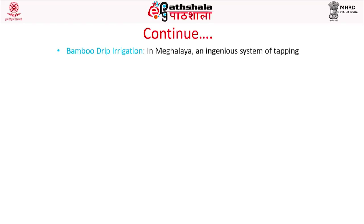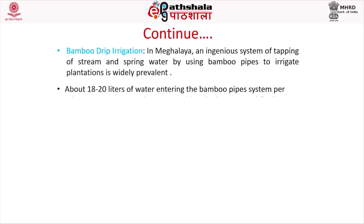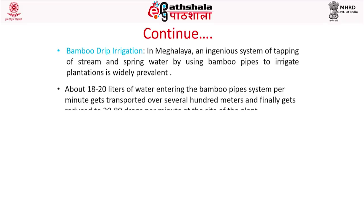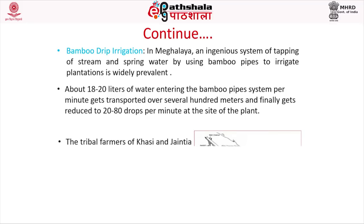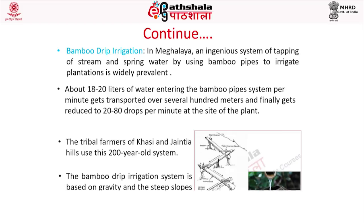In Meghalaya, an ingenious system of tapping stream and spring water using bamboo pipes to irrigate plantations is widely prevalent. About 18 to 20 liters of water entering the bamboo pipes per minute get transported over several hundred meters and finally reduced to 20 to 80 drops per minute at the plant site. The tribal farmers of the Khasi and Jaintia Hills use this 200-year-old system. The bamboo drip irrigation system is based on gravity, and the steep slopes facilitate its implementation.